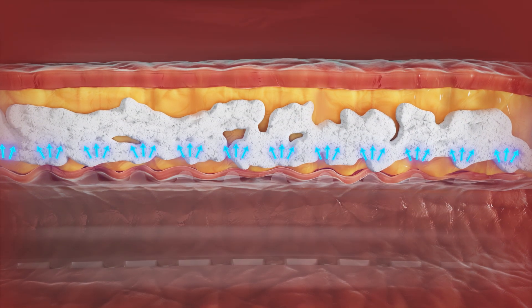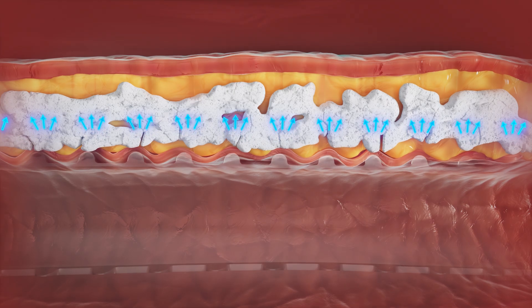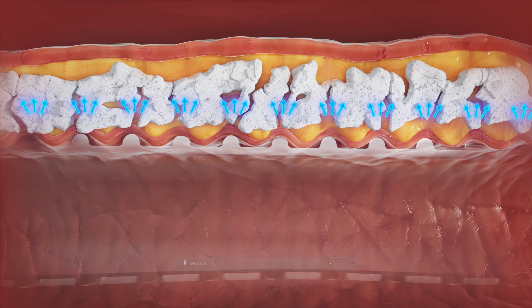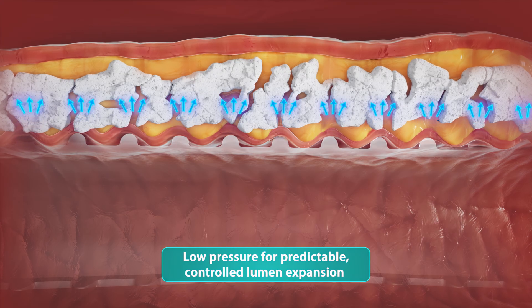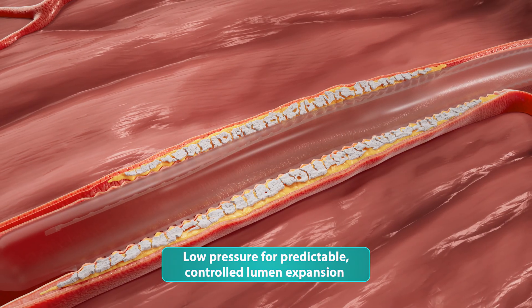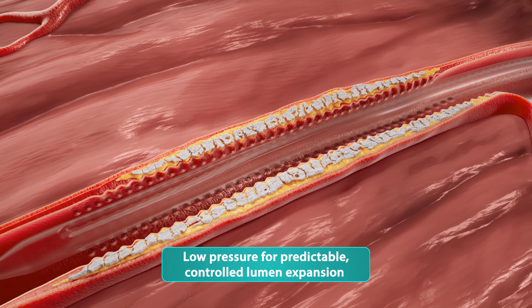As the balloon inflates, the resulting serrated lines are more responsive to directed energy, allowing predictable expansion along the lines. Using low pressure, the serrations remodel the lesion and allow for predictable and controlled lumen expansion.